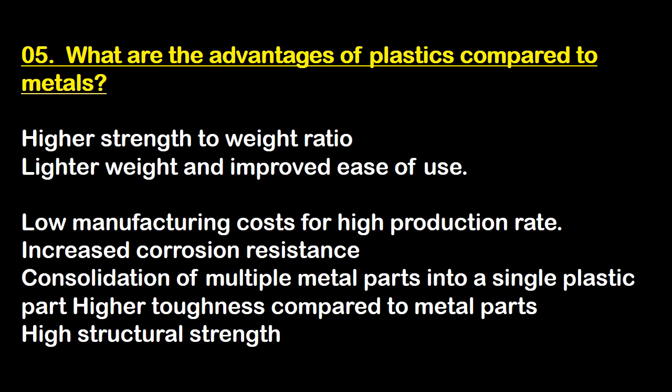Question five: what are the advantages of plastic compared to metal? First, higher strength-to-weight ratio and lighter weight. Second, improved ease of use. Third, low manufacturing costs for high production rates. Fourth, increased corrosion resistance. Fifth, consolidation of multiple metal parts into a single plastic part. Sixth, higher toughness compared to metal parts and high structural strength.